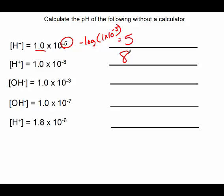The next one is OH concentration. So first, I want to find my pOH. My pOH would be 3, therefore my pH would be 11. The next one, we have pOH would equal 7, therefore pH would equal 7.